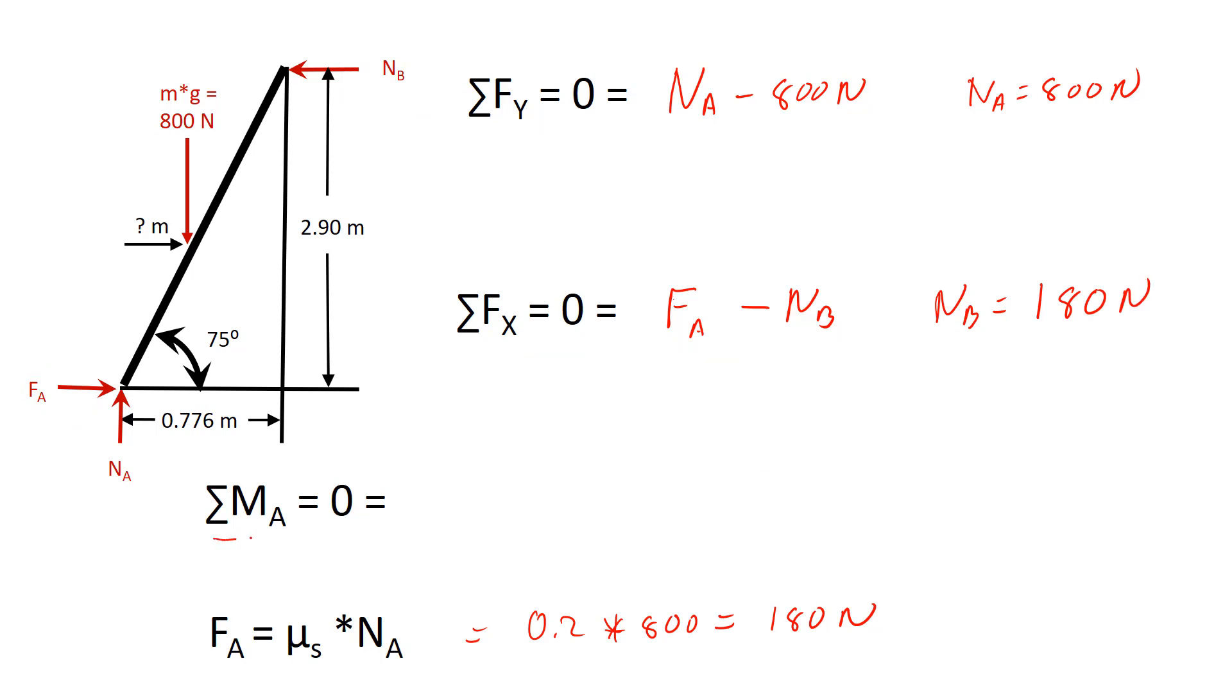My last equation is the sum of the moments about any point. Again, I chose point A to minimize the number of terms in this equation. And that is, I have the force NB at a perpendicular distance of 2.9 meters. Counterclockwise, that's positive, so I've got NB times 2.90. I have my force here of 800 newtons at some unknown distance D. And that will be clockwise around point A. So that's minus 800 times D, our unknown distance. And we know NB, so we can now calculate what this distance D here has to be.